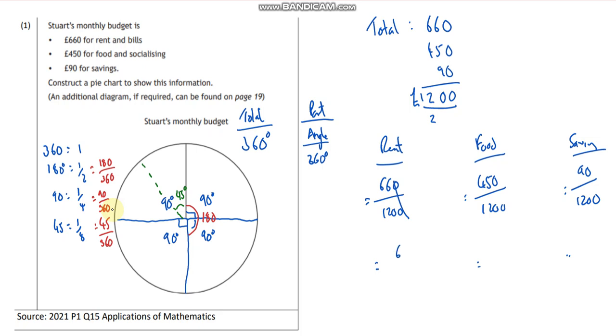Cancel the zeros. 66 out of 120. We should spot that divides by 6, so that's 11 out of 20. That's as far as that's going. Again cancel the zeros. 45 out of 120. We should spot that divides by 5.